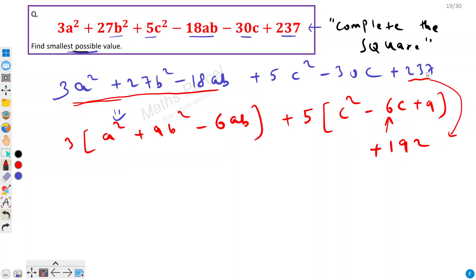If you subtract 45 from this then you will get 192. Now I can rewrite this whole as 3(a - 3b)² + 5(c - 3)² + 192.